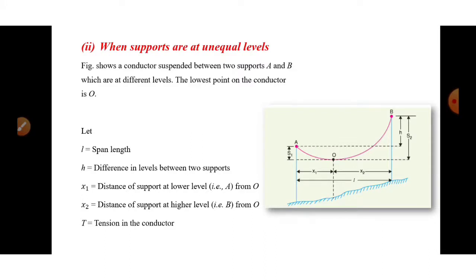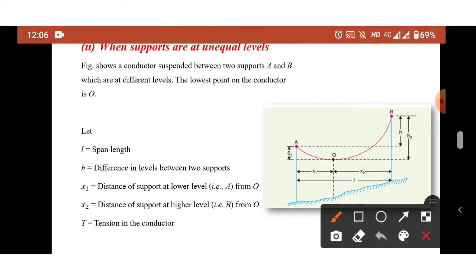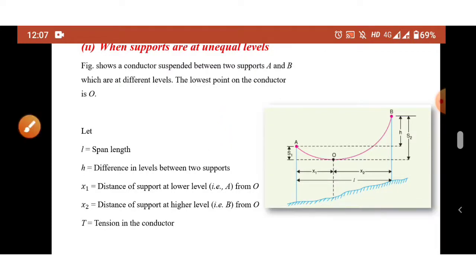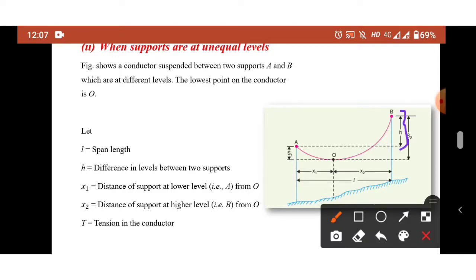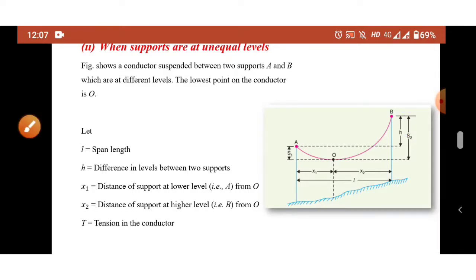Consider a figure where the two supports A and B are at different levels. The lowest point on the conductor is O. The distance from support A to the lowest point is X1, and from support B it is X2. The span length L equals the distance between the two supports. H is the difference in levels between the two supports. There are two different sags: S1 is the sag between support A and the lowest point O, and S2 is the sag between support B and the lowest point O. T is the tension in the conductor.